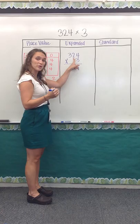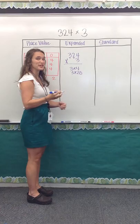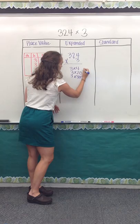This is not just 3 times 2, but it's actually 3 times 20, because 2 is in that tens place value. So we have 3 times 20, and then 3 times 300, because that 3 is in the hundreds place value.